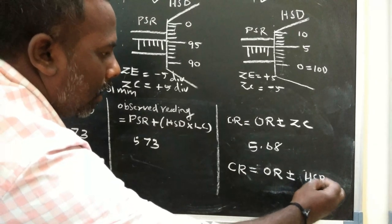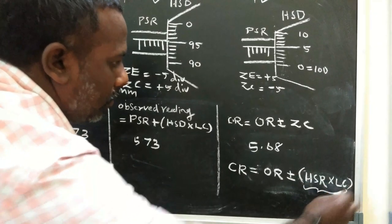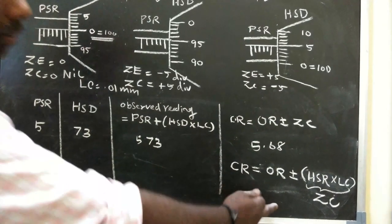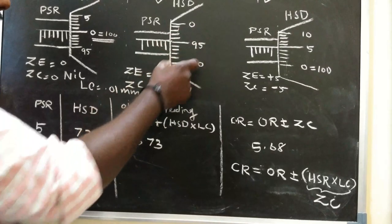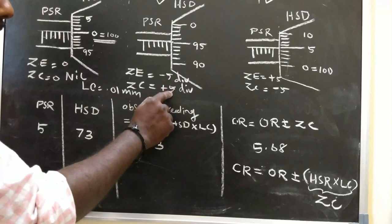The correction factor depends on whether you're using divisions or applying the least count directly.